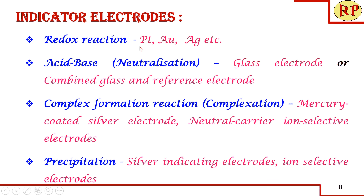Looking at which electrodes are commonly used for different titration types: for redox reactions, metallic electrodes are used; for acid-base titrations, the glass electrode or a combined glass and reference electrode; for complexometric titrations, metallic or ion selective electrodes; and for precipitation titrations, similarly metallic or ion selective electrodes.